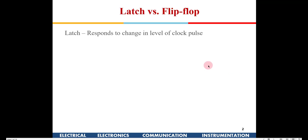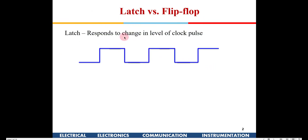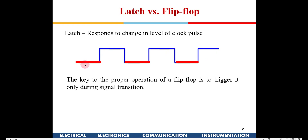Let's first define what a latch is and what a flip-flop is and understand the difference. A latch responds to the change in the level of the clock pulse. That means as long as the clock is high, whatever is happening at the input gets reflected at the output — that is what we saw with the enable.